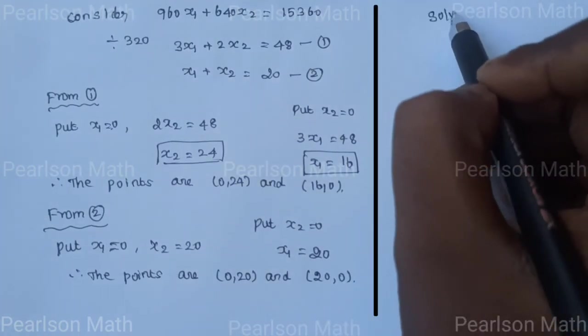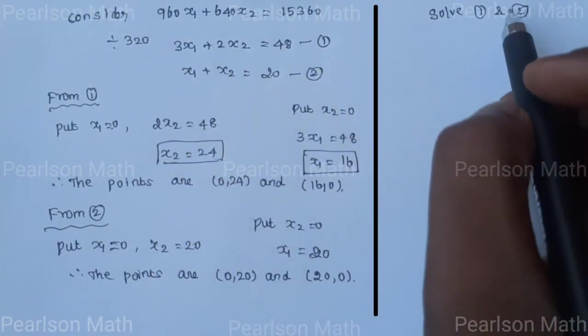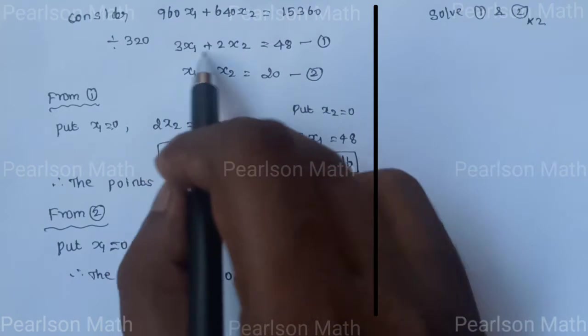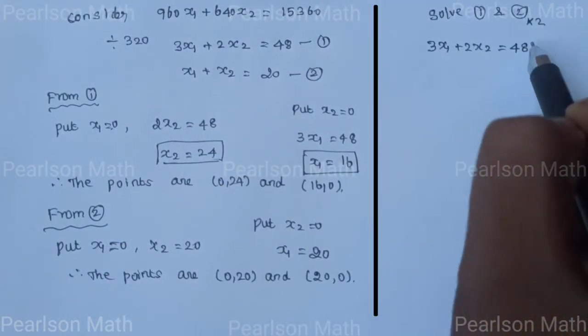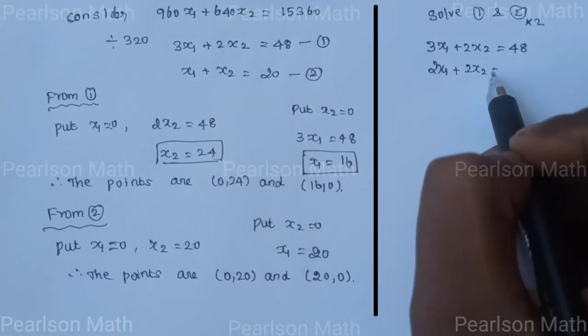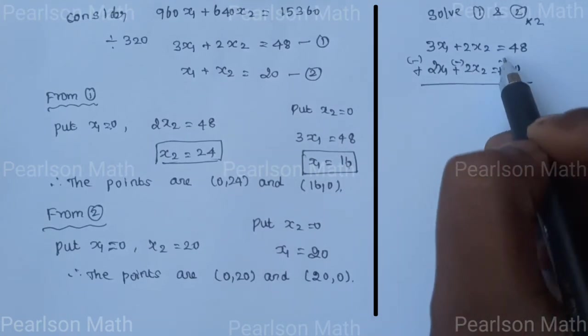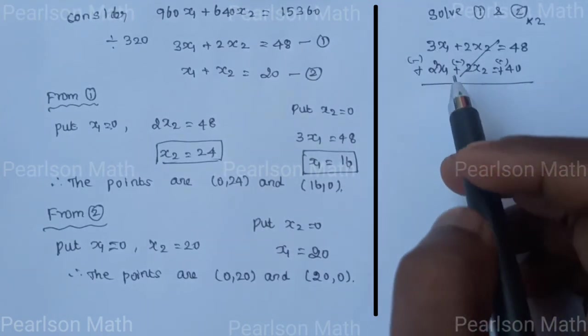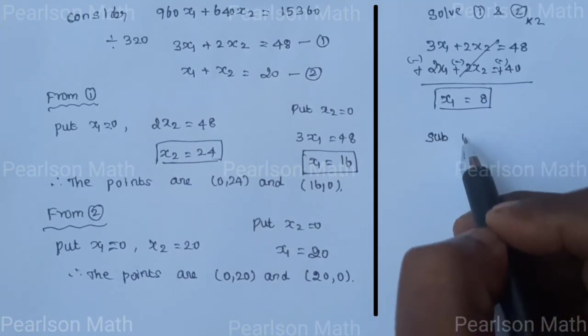Now solve equations 1 and 2. First equation stays the same. Multiply the second equation by 2: 2x₁ plus 2x₂ equals 40. Change sign and subtract: 2x₂ minus 2x₂ cancel, so x₁ equals 48 minus 40 equals 8.